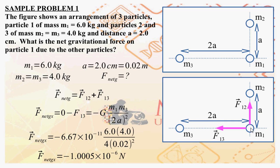As far as m1 is concerned, m1 will be attracted towards m2 with force F12, and m1 at the same time will be attracted to m3 with force F13. The net gravitational force on m1 is just the sum of these two forces, F12 plus F13. Since force is a vector quantity, performing this addition requires the component method.